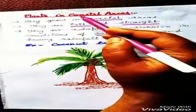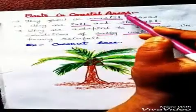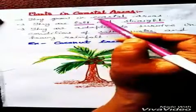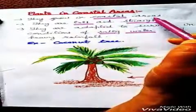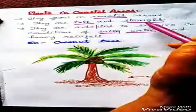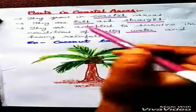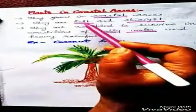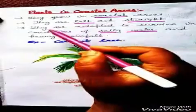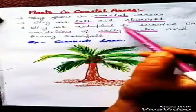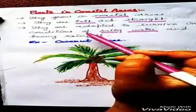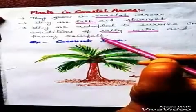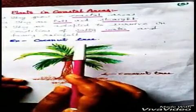Plants in coastal areas grow near the seashore. They are tall and straight. They are adapted to survive in conditions of salty water and heavy rain. For example, coconut trees.